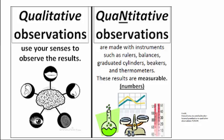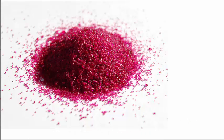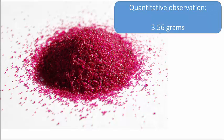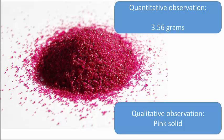Let's do an example. We've got a solid — imagine this is one of the reactants in one of our experiment steps. If we were to make a quantitative observation of this solid, we would need to measure something about it. For example, if we weighed it and found it had a mass of 3.56 grams, that would be a quantitative observation. To make a qualitative observation, I would need to describe it — we might say it is a pink solid. That is a qualitative observation, but it's not a very good one because it's not very descriptive.